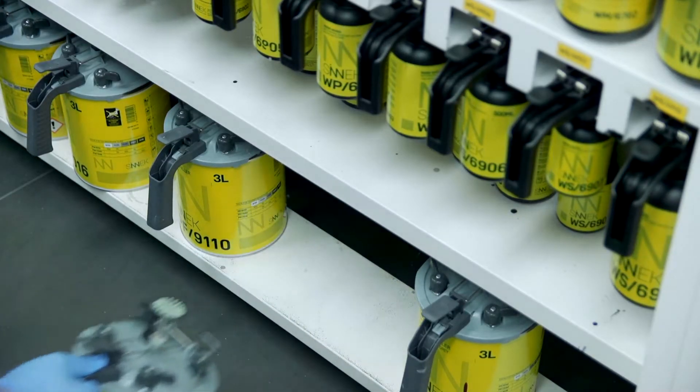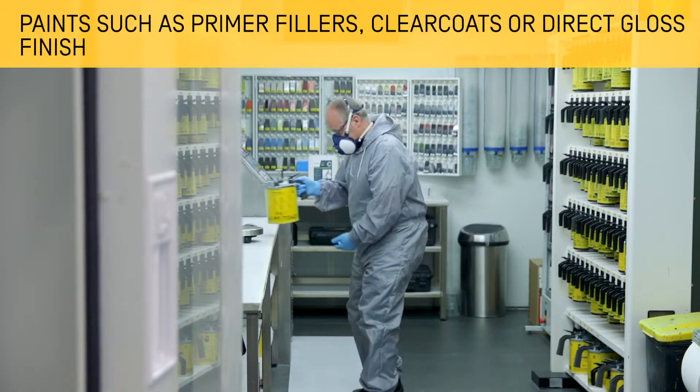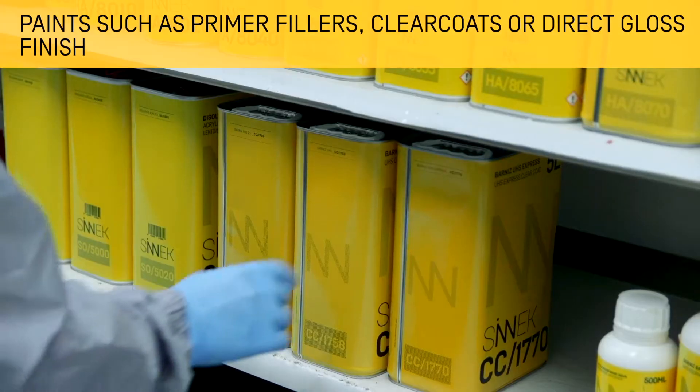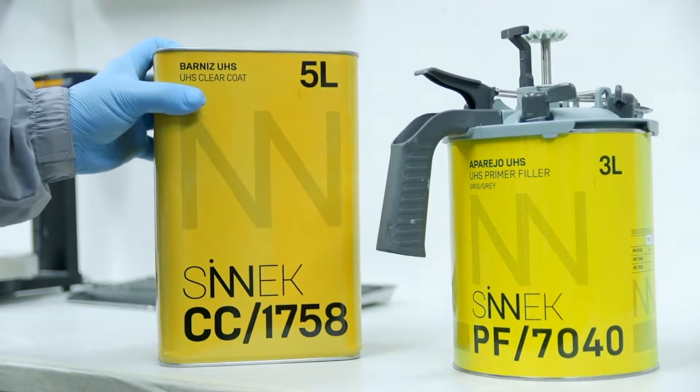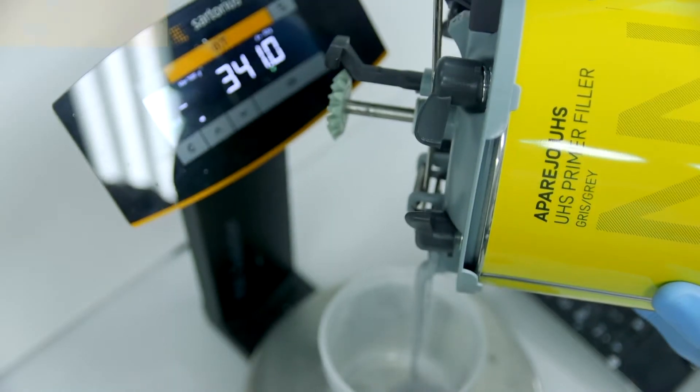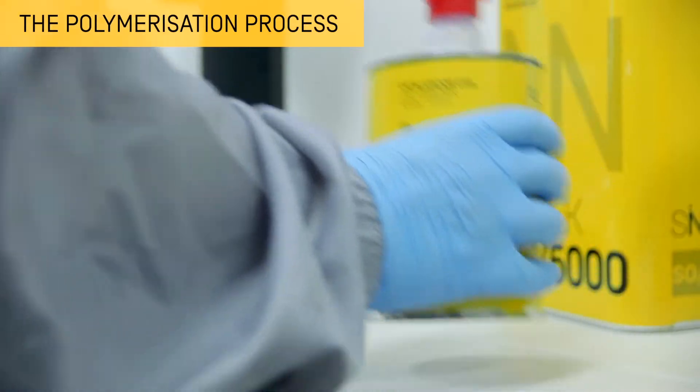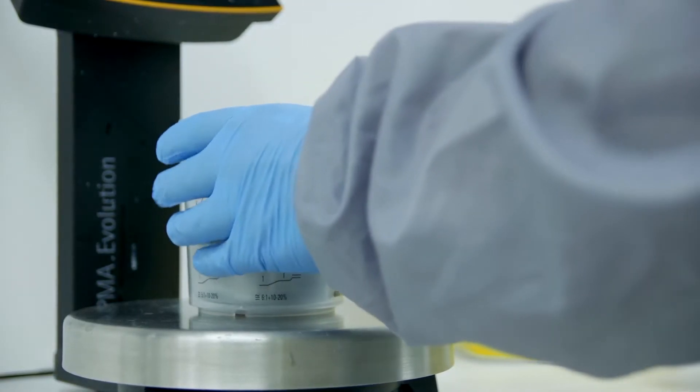Some of the paints used in bodywork, such as fillers or clear coats, are two-component paints. That is, they are made up of a base and a hardener. The mixture of these two components triggers a polymerization process, resulting in rapid drying or hardening of the paint.